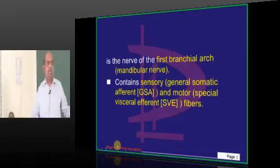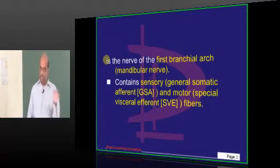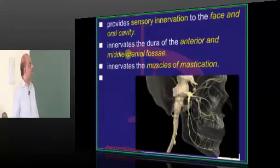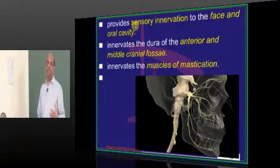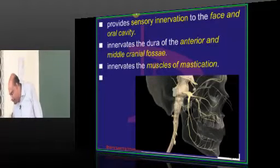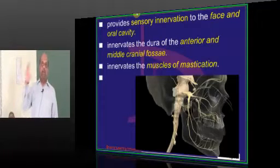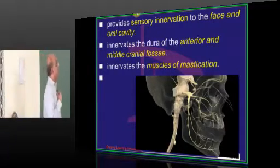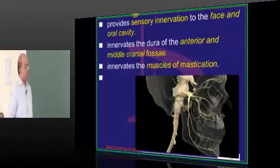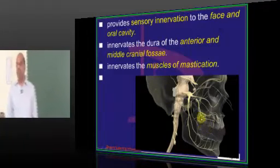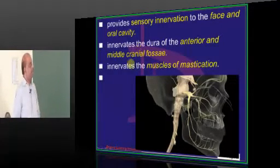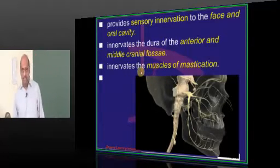Trigeminal nerve is also called the nerve of the first branchial arch — specifically the mandibular division of the trigeminal is called the nerve of the first branchial arch. Trigeminal basically contains the general somatic afferent and the special visceral efferent, both groups of fibers. The trigeminal provides sensory innervation to the face and also to the oral cavity. It innervates the dura of the anterior and middle cranial fossa and innervates the muscles of mastication.